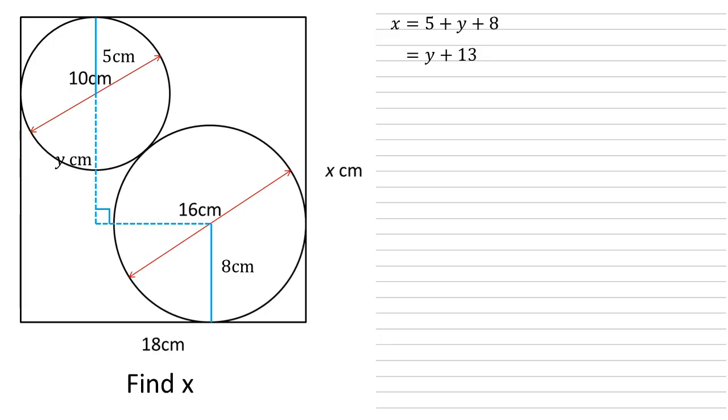How are we going to find Y? Well if we join the center of these two circles together like this we've got a right angled triangle here and that hypotenuse is made up of two radii. The radius of the top circle and the radius of the bottom so its length must be five plus eight so 13 centimeters.